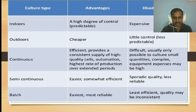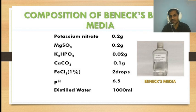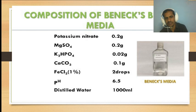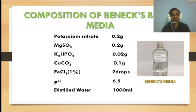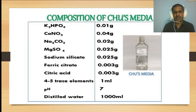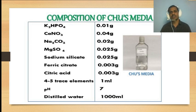Commonly used is the Bennett medium (Bennett broth medium). Its composition is: potassium nitrate 0.2 g, magnesium sulfate 0.2 g, potassium hydrogen phosphate 0.02 g, calcium carbonate 1.1 g, ferric chloride 2 drops, pH maintained at 6.5, and made up to 1000 ml. This is the Bennett broth medium.